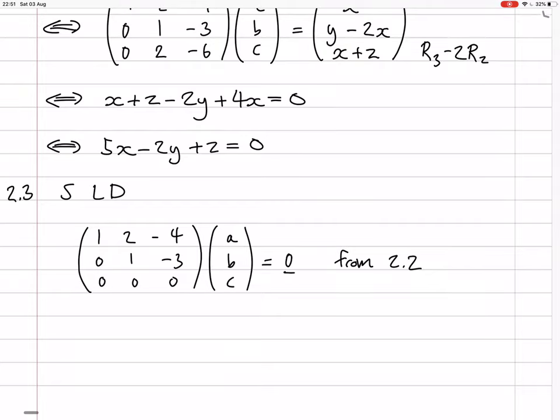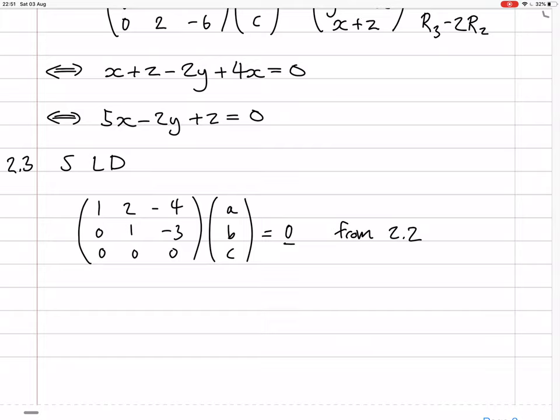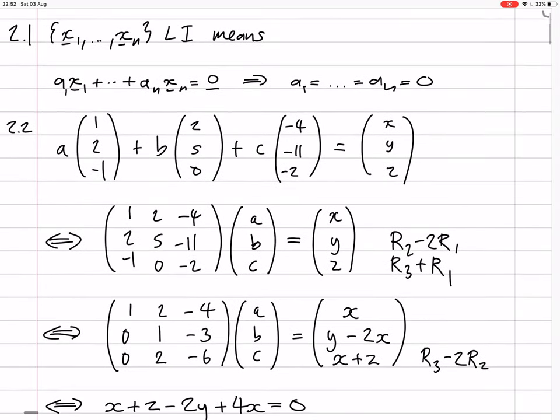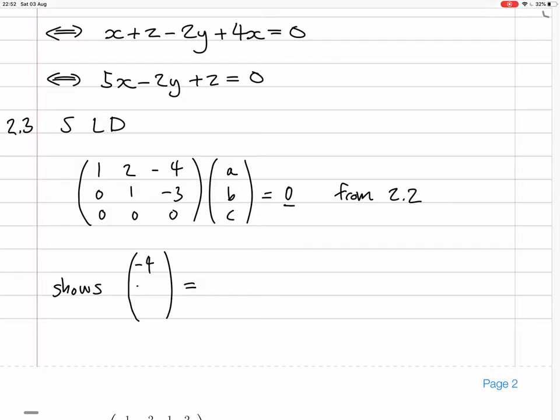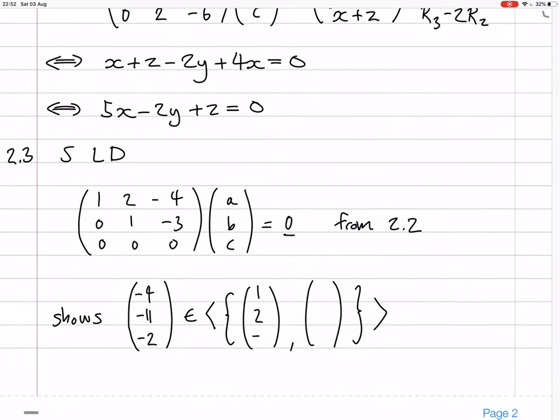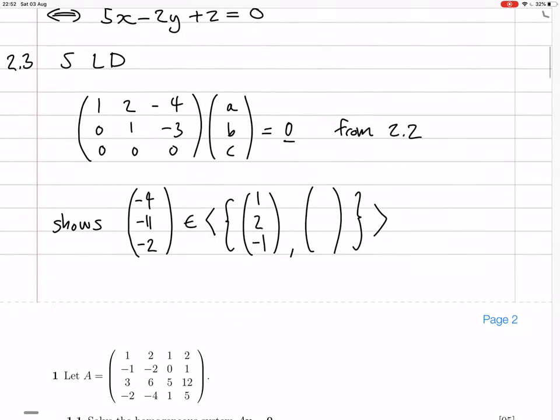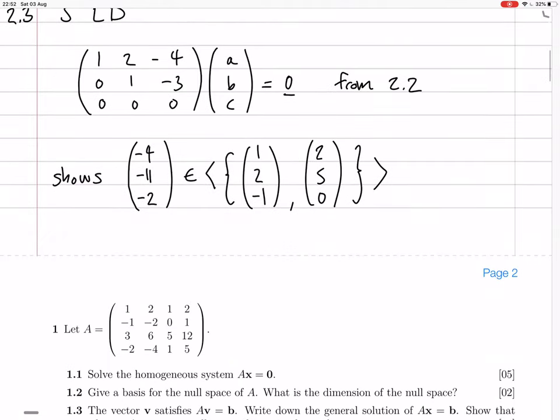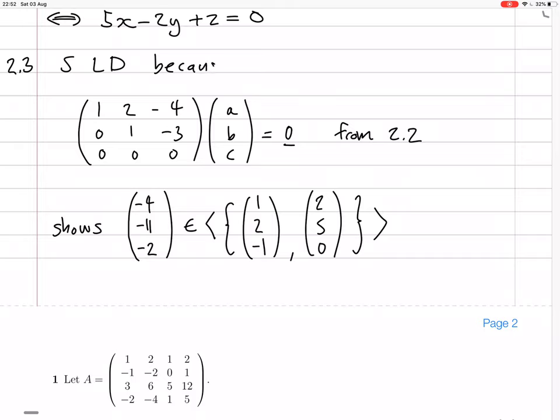That equation from 2.2 shows that the third vector is a linear combination of the first two vectors. The third vector is minus 4, minus 11, minus 2. So I could say that it's in the span of those first two vectors, the set generated by those first two vectors. They were 1, 2, minus 1, and 2, 5, 0. And that's why this set S is linearly dependent.